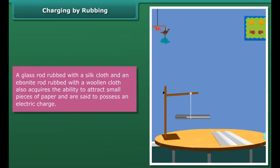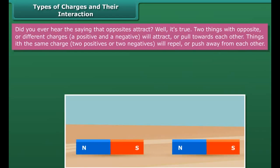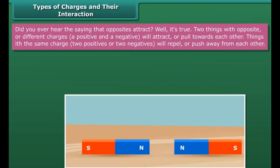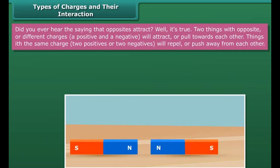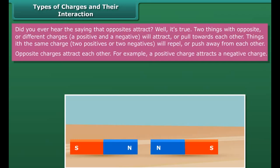This happens not by magic — there is a clear and logical explanation. Initially the comb is electrically neutral, so it has no effect on the tiny pieces of paper. When the comb is rubbed on your hair, it gets electrically charged. This charged comb exerts an electric force on the tiny pieces of paper and attracts them. A glass rod rubbed with a silk cloth and an ebonite rod rubbed with a woolen cloth also acquire the ability to attract small pieces of paper and are said to possess an electric charge.